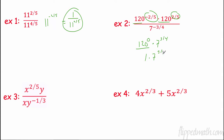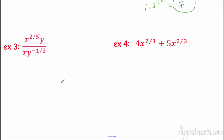Down here we have a couple of variables. I like to put ones here so I know what I'm working with. I have a division rule: two fifths minus one is negative three fifths, so I have x to the negative three fifths. Then one minus negative one third — that's like plus one third — so that's y to the four thirds. Can't have negative exponents, so the answer is y to the four thirds over x to the three fifths.